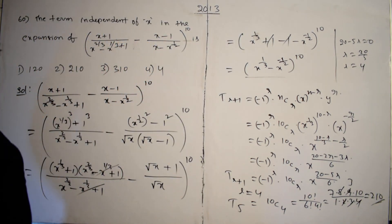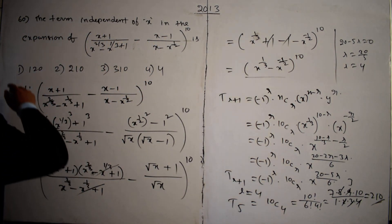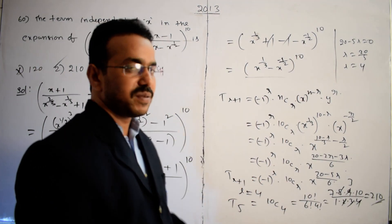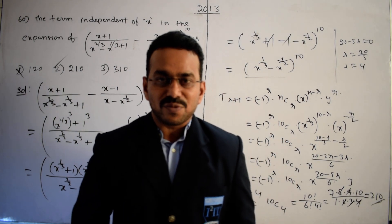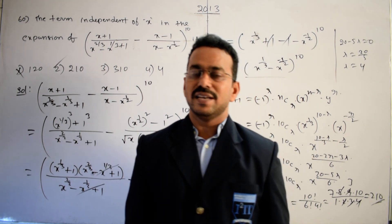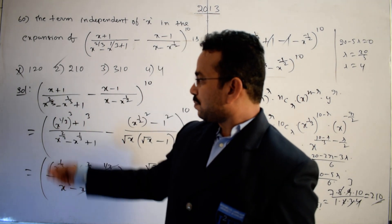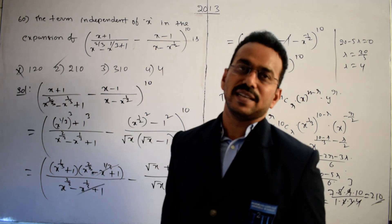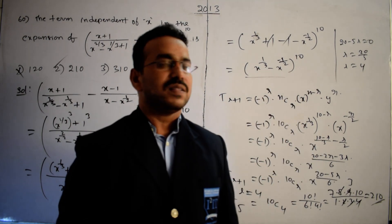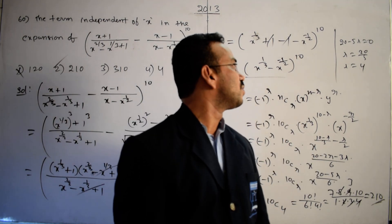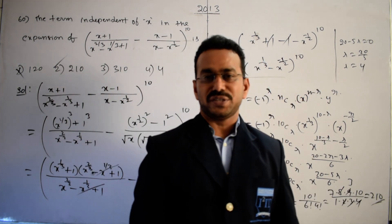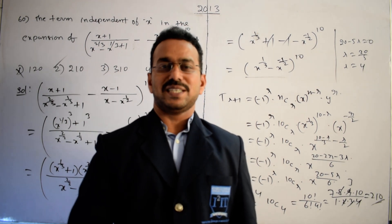Comparing with the given options: 120 is incorrect, 210 is the correct option. The process applied here: by using simple algebraic identities we converted the lengthy expansion into (x^(1/3) - x^(-1/2))^10, from which we easily calculated the independent term of x as 210. Thanks for watching.